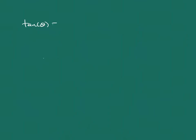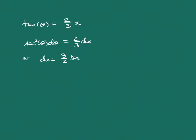So if the tangent of theta is 2/3 x, then taking the derivative of both sides, the derivative of tangent gives secant squared of theta d theta equal to 2/3 dx. Another way of looking at that is that dx equals 3/2 times secant squared of theta d theta.